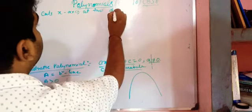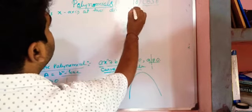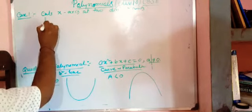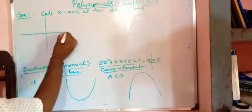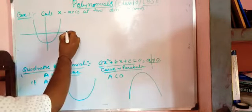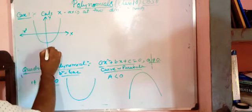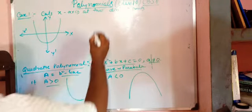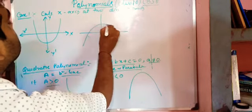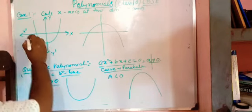Two distinct points - if you draw the figure, this is x, y, x', y' and it cuts the x-axis at A and A'.